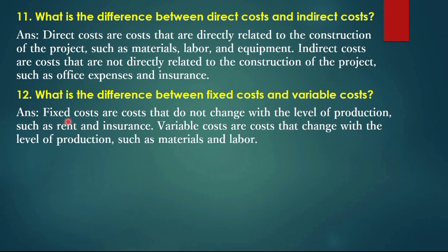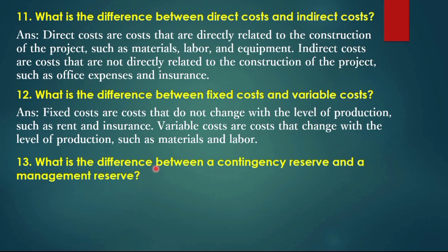Fixed costs are costs that do not change with the level of production, such as rent and insurance. Variable costs are costs that change with the level of production, such as materials and labor. Question 13: What is the difference between a contingency reserve and a management reserve?